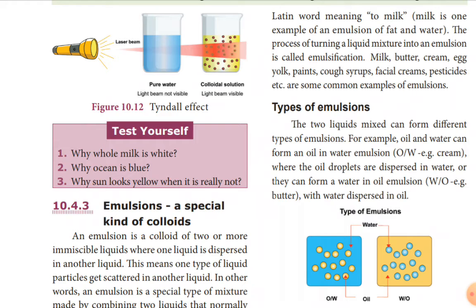The sky is blue and sunlight appears yellow because of scattering of light by atmospheric particles, which is a type of colloidal effect similar to the Tyndall effect.